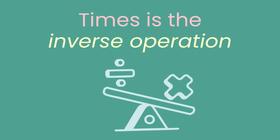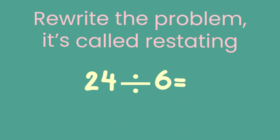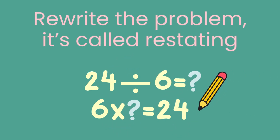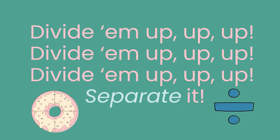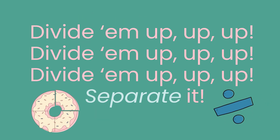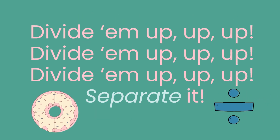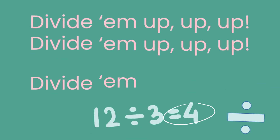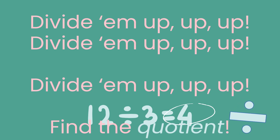Times is the inverse operation — rewrite the problem, it's called restating. Divide them up, divide them up, separate it. Divide them up, divide them up, divide them up — find the quotient.